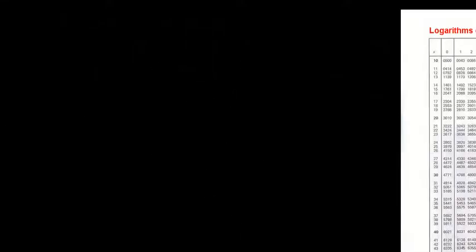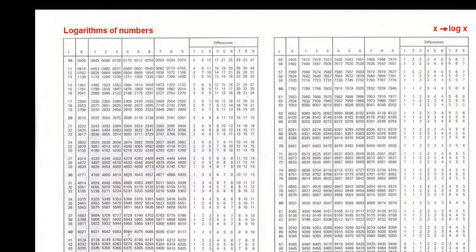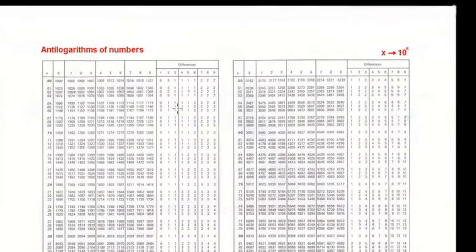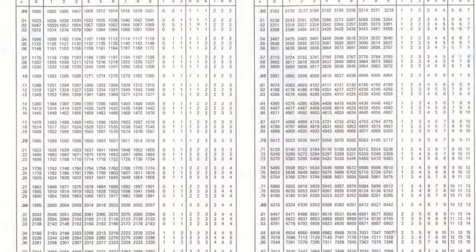Using the logarithm tables to find the antilogarithm of numbers can be very stressful. So instead of using the logarithm tables, we'll use the antilogarithm tables — the four-figure antilogarithm tables to find the antilogarithm of numbers. It's quite fast using the antilogarithm tables.